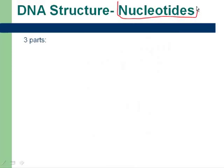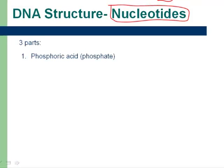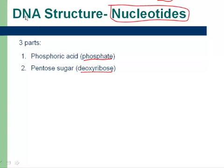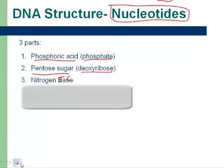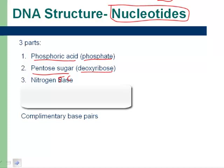We talked about this before in nucleic acids — DNA is made up of nucleotides. What does it consist of? First of all, it's got this phosphate-sugar backbone. We call it phosphate and deoxyribose, because that's where the deoxyribonucleic acid comes from. More specifically, it's a phosphoric acid and a pentose sugar, which means a 5-carbon ring. The last component is the nitrogen bases. The Gs and Cs go together, and the As and Ts, because they're complementary.